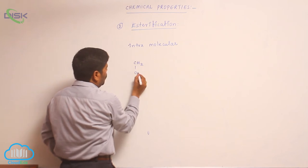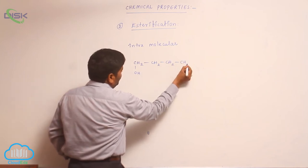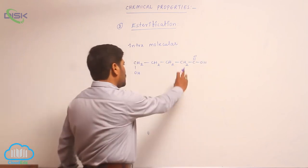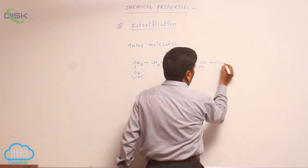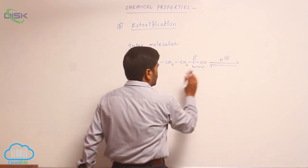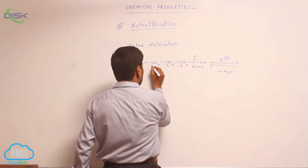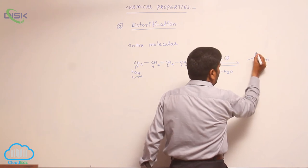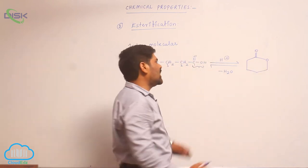For example, here is CH2OH, then CH2, then CH2, then CH2, then C double bond O — OH. Within the same molecule, it contains a carboxylic group as well as an alcoholic group. So in the presence of acid medium, loss of a water molecule takes place, and a 6-membered ring is formed. This is known as a cyclic ester.